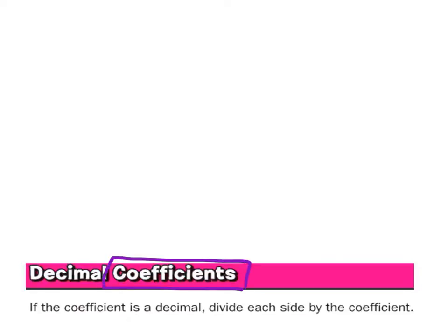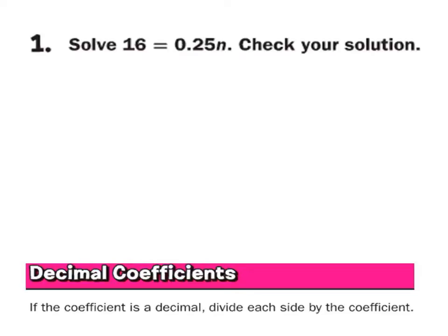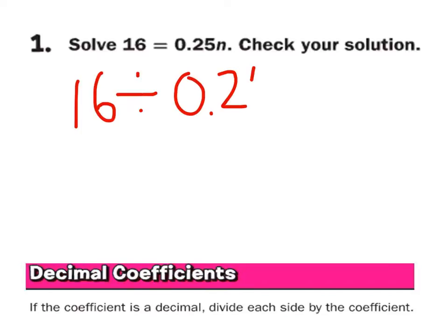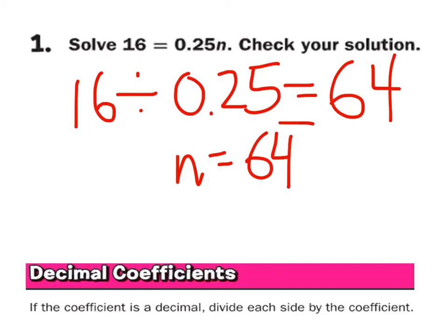Coefficients — who does not know what a coefficient is? Allie? You don't know what it is? All right, example. How would I solve this example? Divide — what am I going to do? Megan? When you divide 16 divided by 0.25. Very good — it's just 16 divided by 0.25. N equals 64. Done.